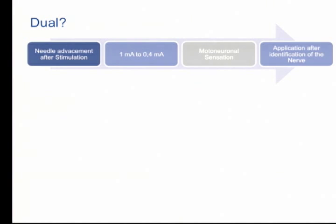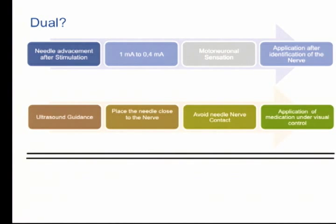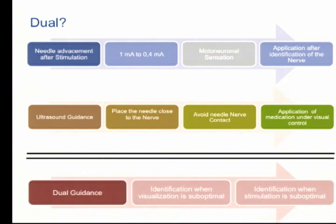In the real situation, dual guidance means putting two things together. One is needle advancement after stimulation, using 1 milliampere down to 0.5 milliampere to find a motor neural sensation and apply medication at the endpoint. With ultrasound, the approach is different: we place the needle close to the nerve, avoid needle-nerve contact, and apply medication under visual control. Dual guidance becomes useful when visualization is suboptimal or when stimulation is suboptimal.